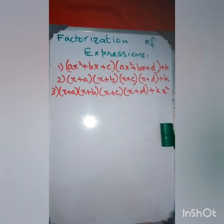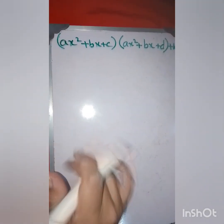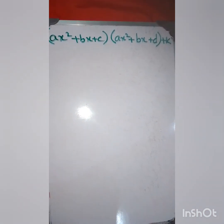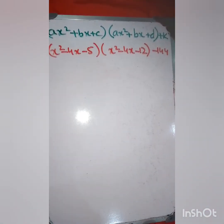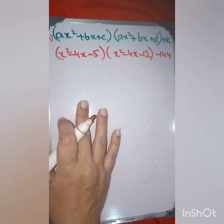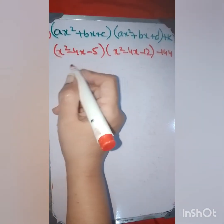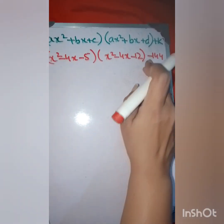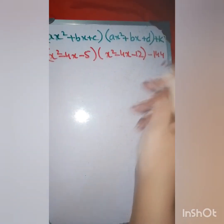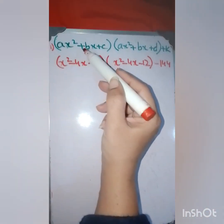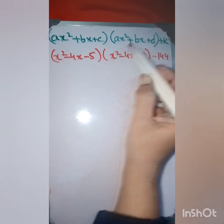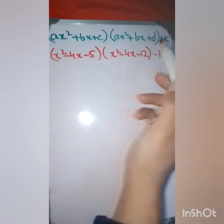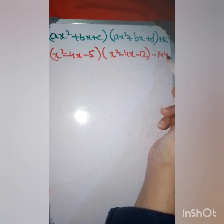Let's start. Here is the first expression we are going to factorize, and we will learn how to factorize such expressions using simple tips. Here is one question in algebraic form. You can see two brackets being multiplied with each other, then a minus sign, and then 144. If you compare it with the general equation, you will see this is ax² and then b and c are some constants, and k is also a constant.